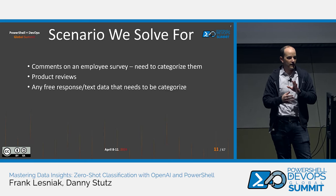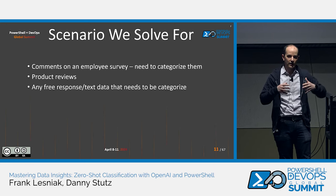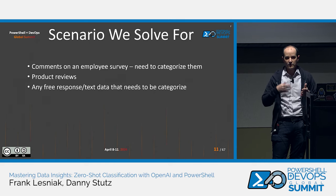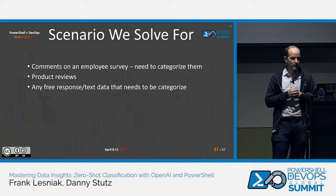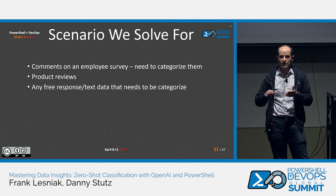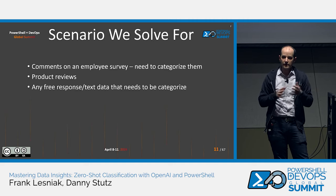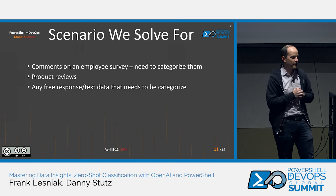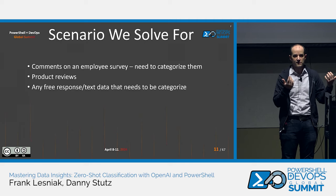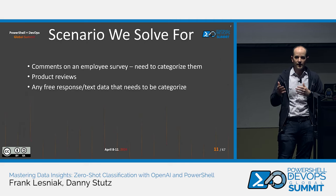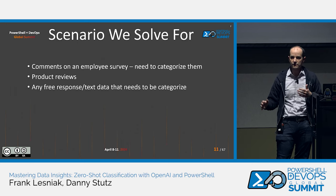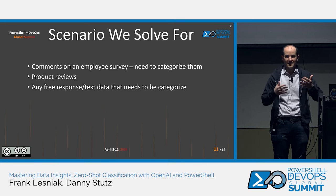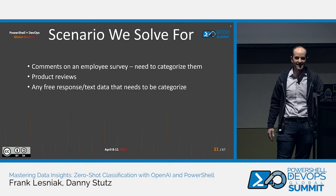With that being said, I want to spend a second on what exactly we're trying to solve for in the demonstration. The main use case is comments on a survey. We want to be able to take those responses and not read hundreds of them — if there are 500 survey responses, we don't want to spend hours looking through them trying to grab all the insights. We want to bucketize those and surface the key insights. You can apply the same logic to product reviews or any other free text responses.